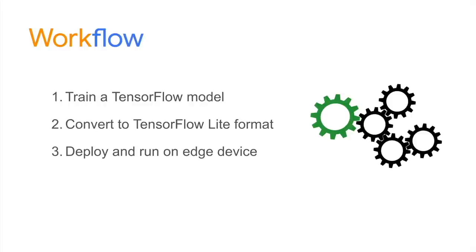The workflow to create a TF Lite model is fairly simple. You start by creating a TensorFlow or Keras model — collecting data, cleaning data, preprocessing, then creating and iterating over models, choosing the one with the best accuracy. From that TensorFlow model, you convert it to a TensorFlow Lite model, where a format change happens. Once converted, you deploy the TF Lite model and run inferences — meaning predictions — on the edge device.